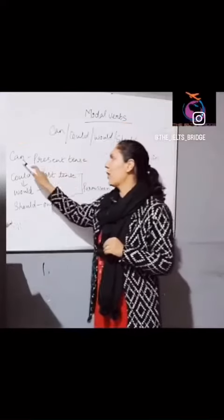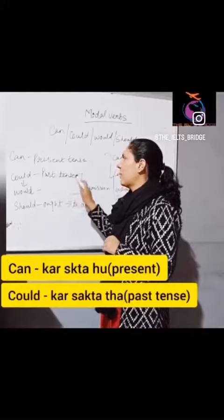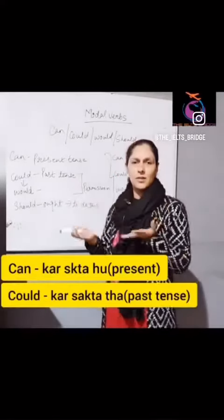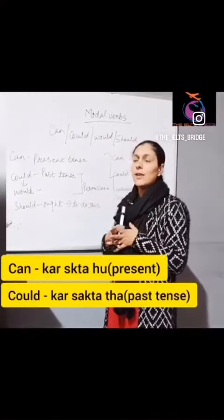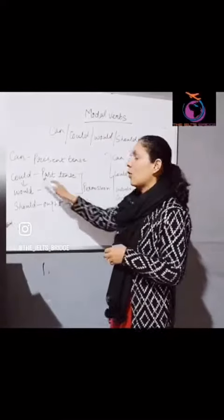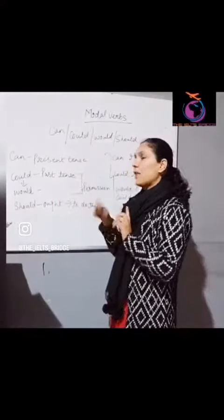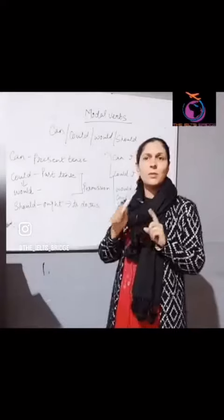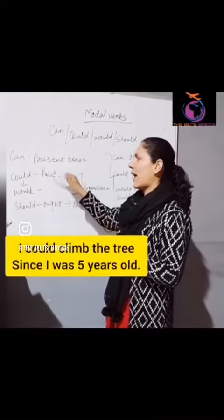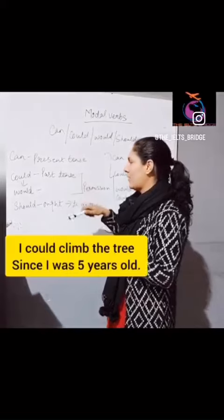Can is always used with present tense and could is used in past tense. Can means that I can do this — like, I can score 90% in my goal. Could is which has been past, like when I was 5 years old, I could climb the tree.